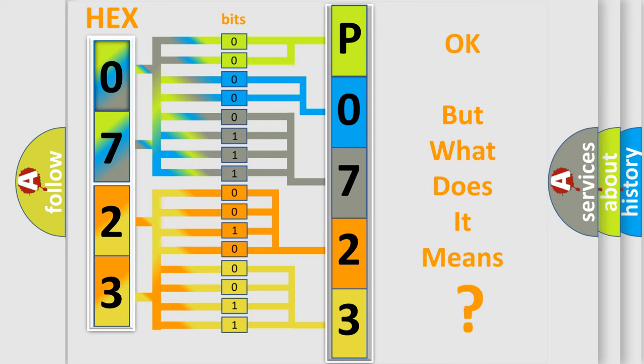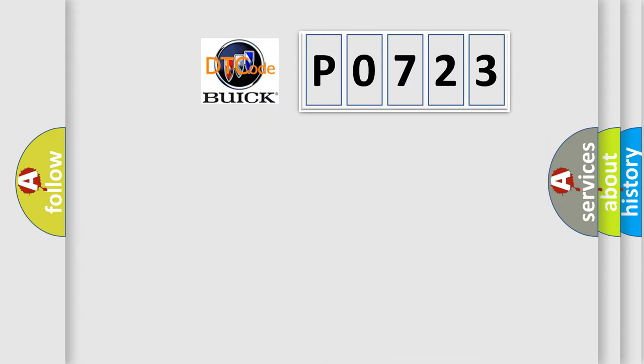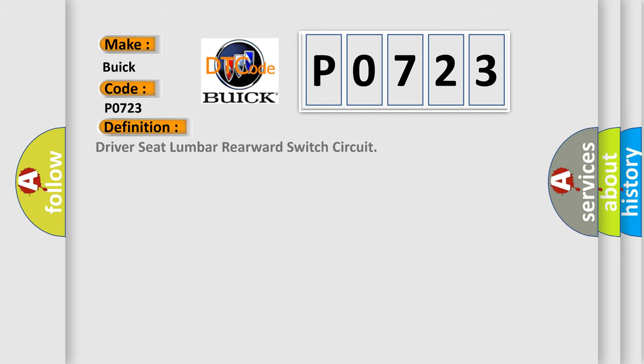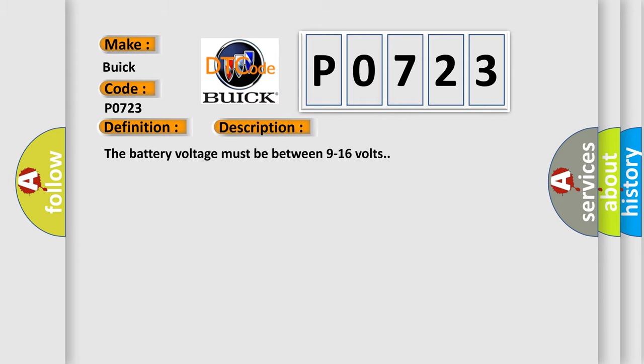The number itself does not make sense to us if we cannot assign information about what it actually expresses. So, what does the diagnostic trouble code P0723 interpret specifically for Buick car manufacturers? The basic definition is: driver seat lumbar rearward switch circuit. Here is a short description of this DTC code.